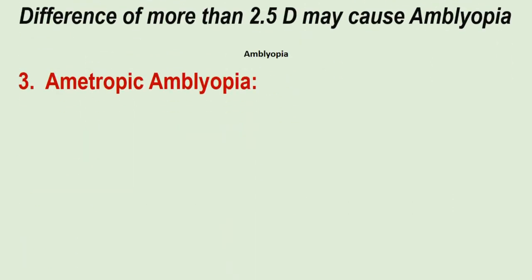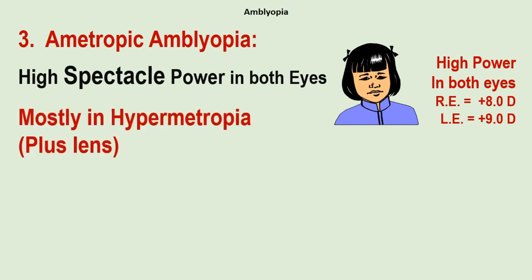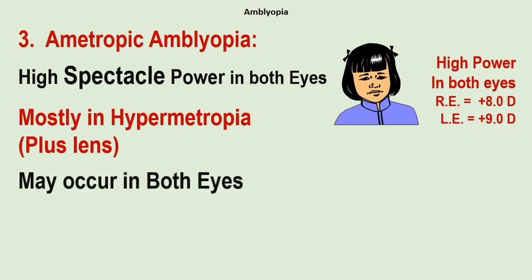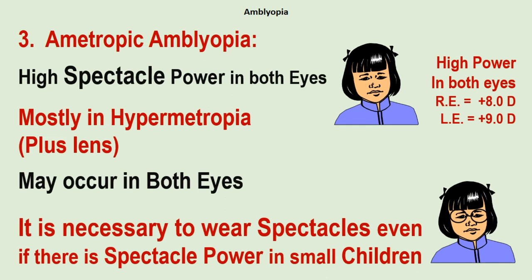Ametropic amblyopia occurs because there is high spectacle power in both eyes. It occurs most commonly in hypermetropia, or plus lens — for example, right eye plus eight and left eye plus nine. It may occur in both eyes, hence it is necessary to wear spectacles even if there is spectacle power in small children.